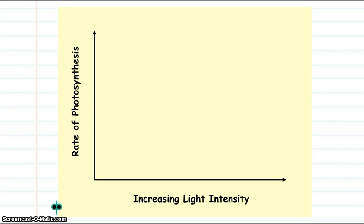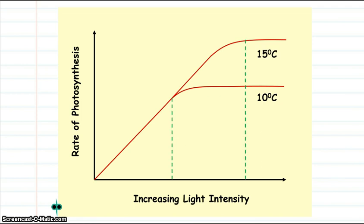In this limiting factor graph, we have the rate of photosynthesis with increasing light intensity. This line represents that trend at 10 degrees C. This other line represents that trend at a higher temperature of 15 degrees C. We can divide that graph into three stages.